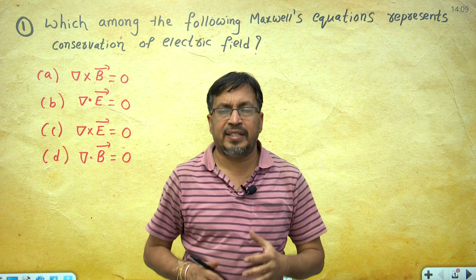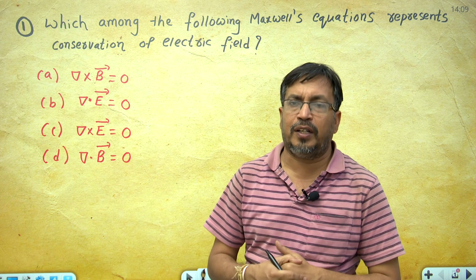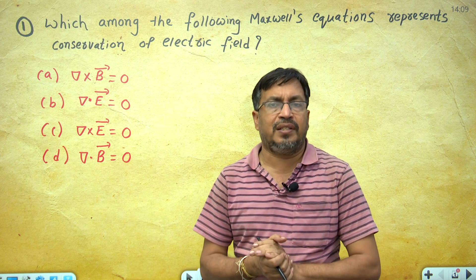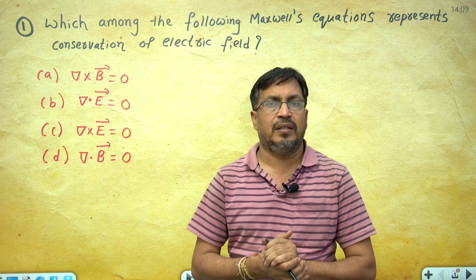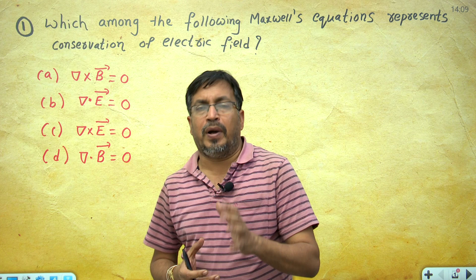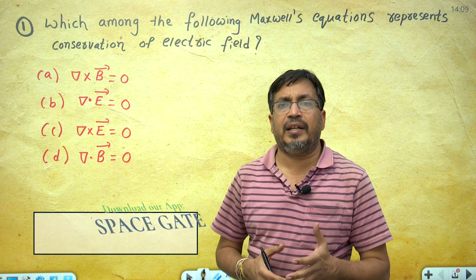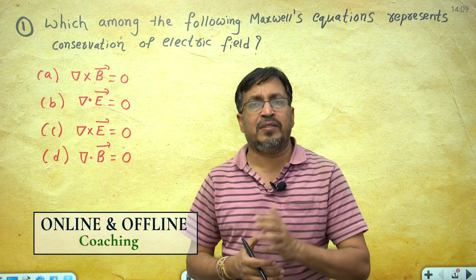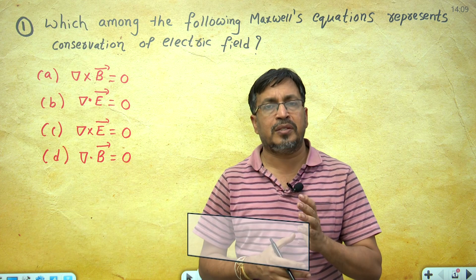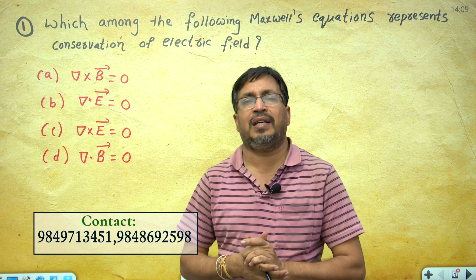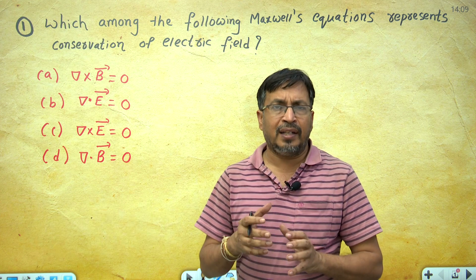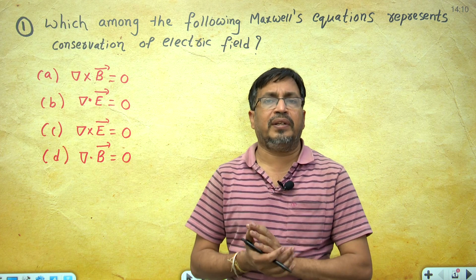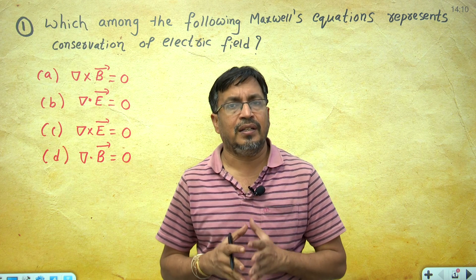Students, in the last video we discussed about magnetostatics and some important questions. Now in this video we are discussing Maxwell's equations in time-varying fields. Before that, remember: we discussed electrostatics as well as magnetostatics — two Maxwell's equations each. Now, what are the modifications, what are the assumptions, and which laws are required to convert into time-varying fields — these types of questions are addressed in this video.